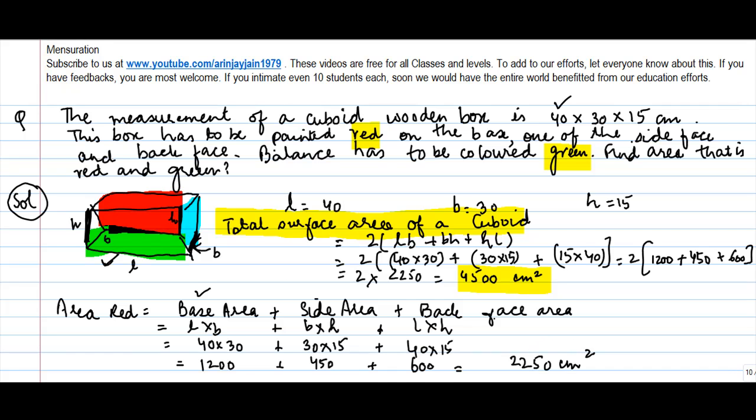Now, if the red portion is 2250 centimeter square, green is going to be how much? I guess I need to use a different color. Green is equal to total minus red, 4500 minus 2250. So, green is also equal to 2250 centimeter square. Here we go.